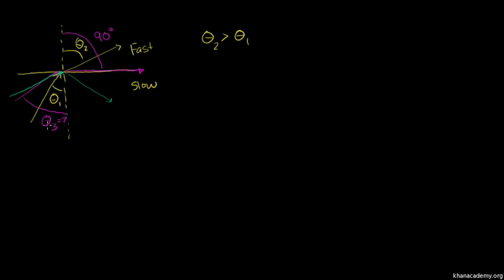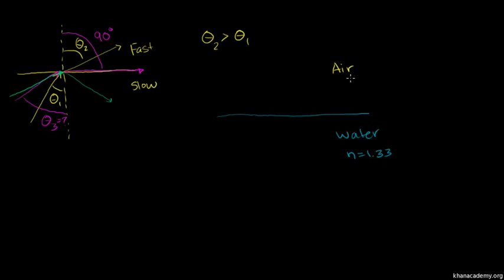At what angle theta 3 do we have a refraction angle of 90 degrees? That incident angle is going to be called our critical angle, because if you have any angle larger than that, you're not going to have refraction — you're not going to escape the slow medium; you're just going to reflect at the boundary back into the slow medium. Let's figure that out with an actual example. Let's say I have water, with an index of refraction of 1.33, and air up here. Air is pretty close to a vacuum, so let's say its index of refraction is 1.00.